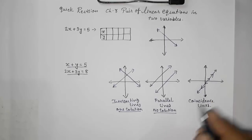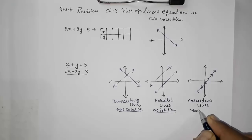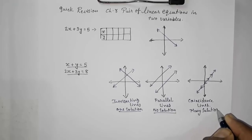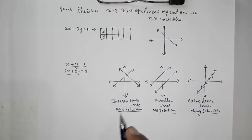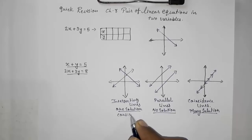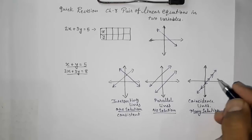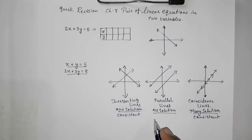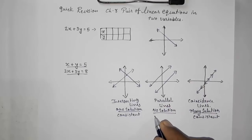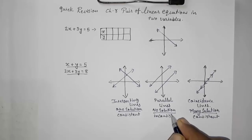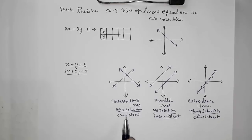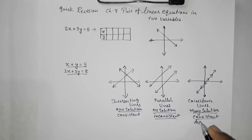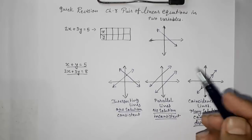When intersecting at one point, we get one solution. When parallel, the lines never intersect so there is no solution. When coincident, we get infinitely many solutions. When we get a solution (one or many), it is called consistent. When we get no solution, it is called inconsistent. The case with infinitely many solutions is also called dependent.